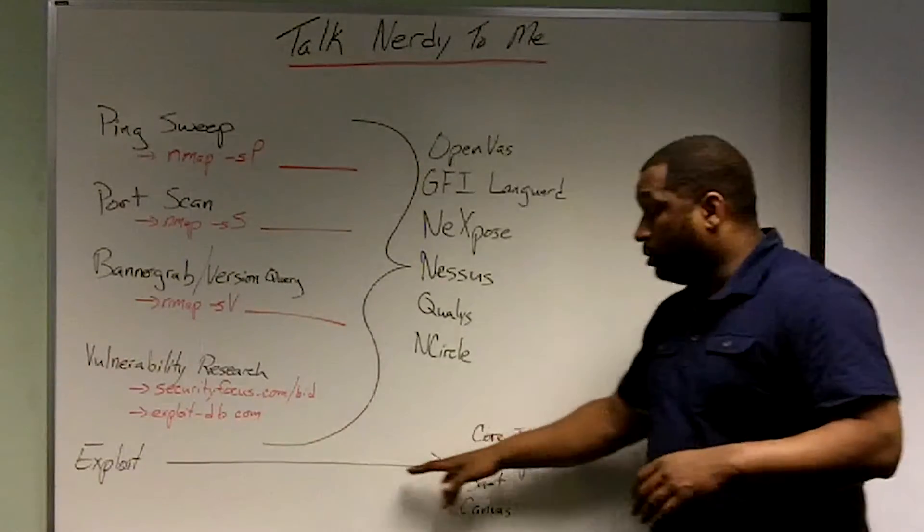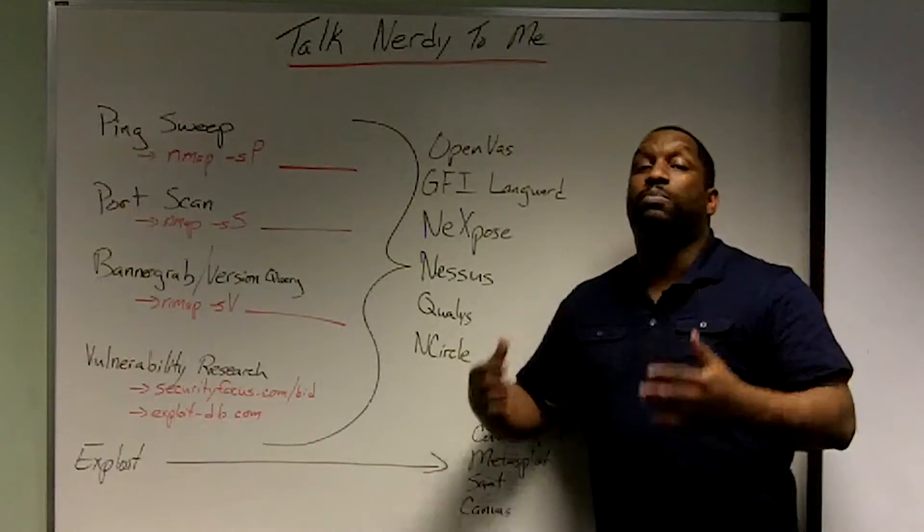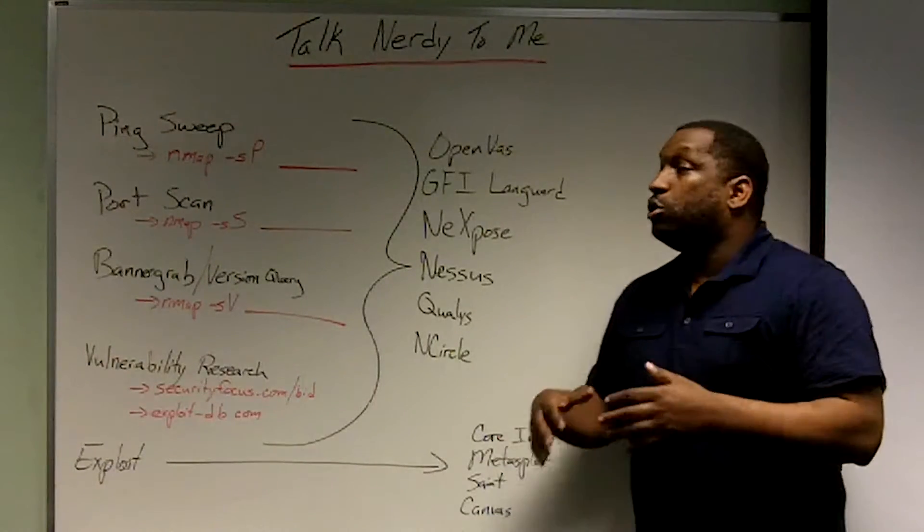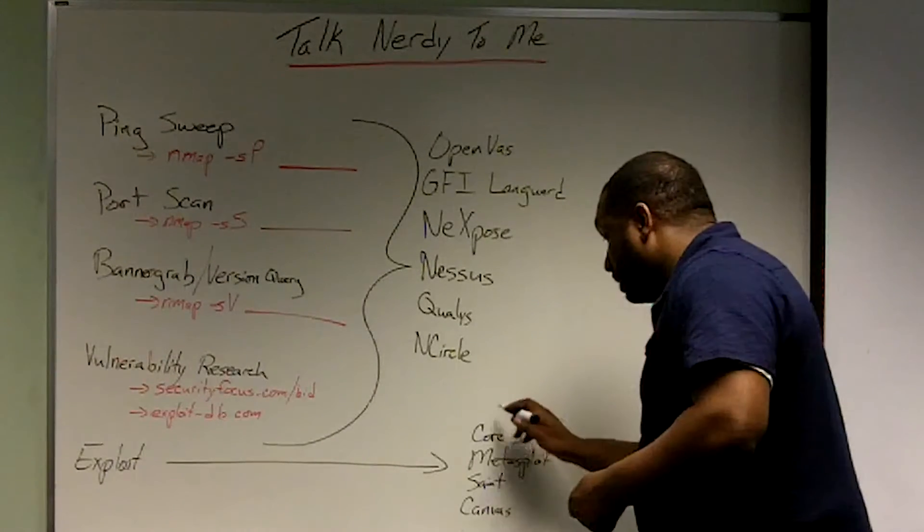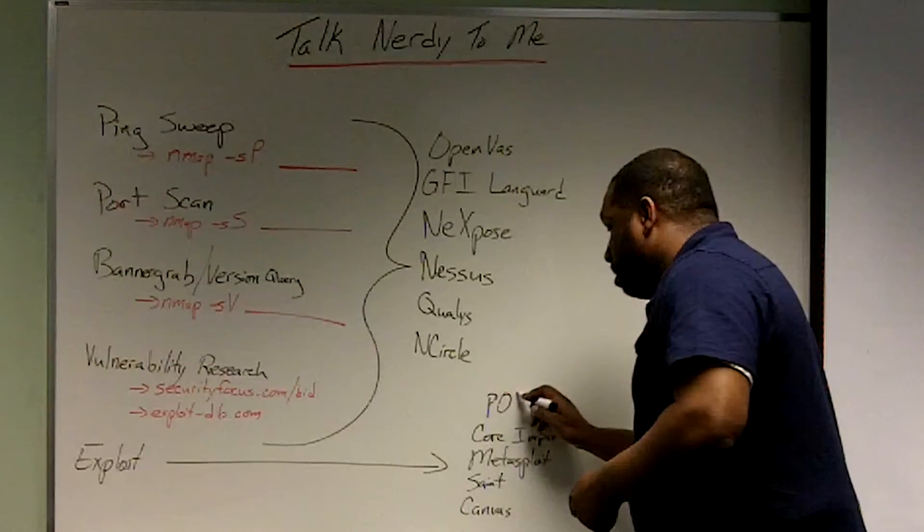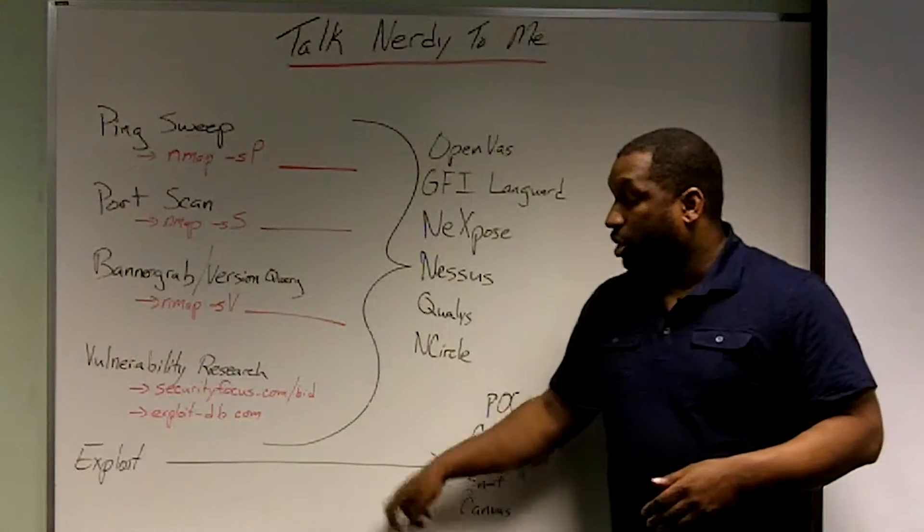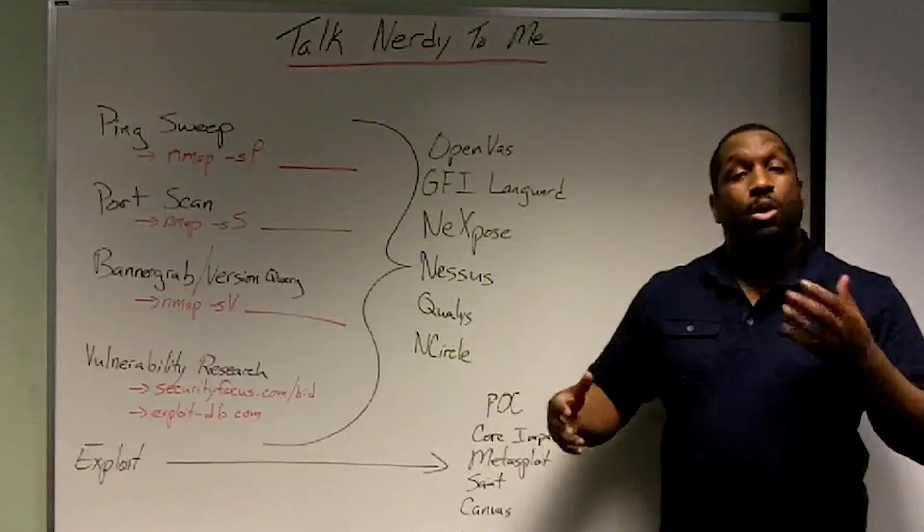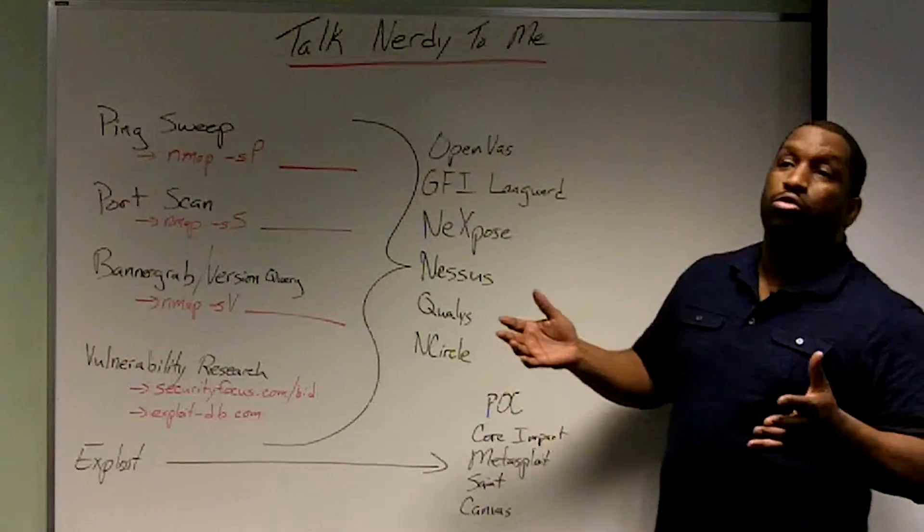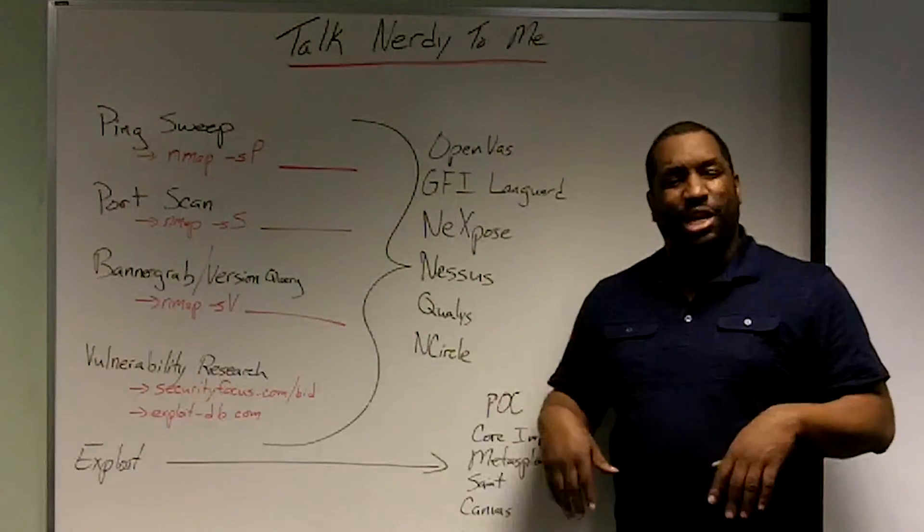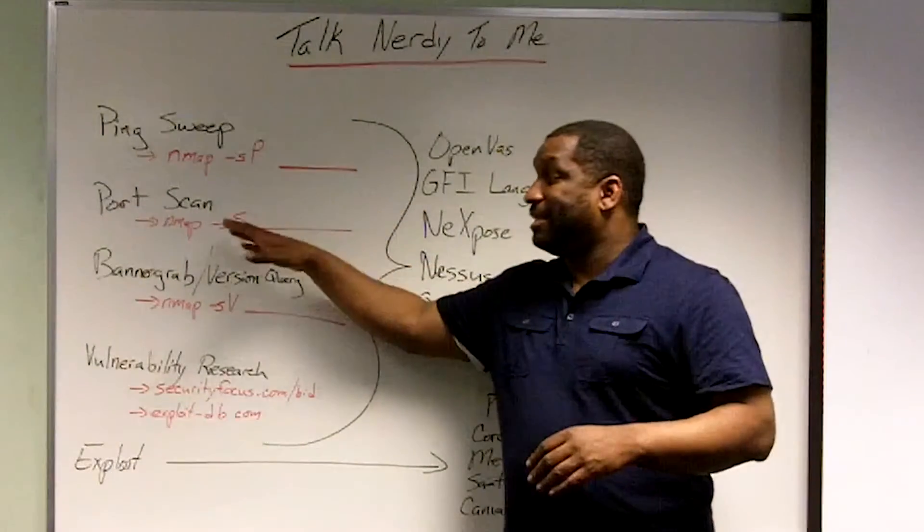Then I will use a framework like Metasploit, Core Impact, Saint, or Canvas to exploit that vulnerability. Sometimes you'll have other code that's out there. Websites like exploit-db and securityfocus.com/bid will have proof of concept code where it's not in Metasploit, but it's just a script that you can download and run the attack yourself. So this is the process that an attacker goes through.